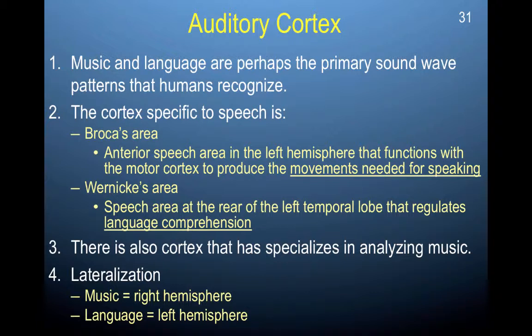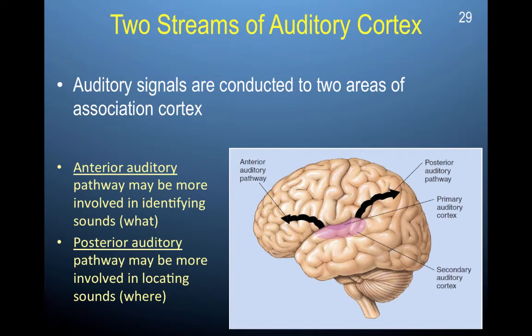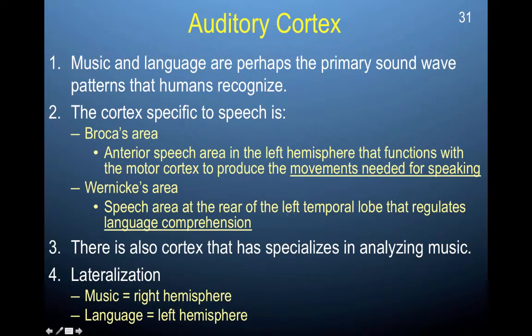Broca's area is the anterior speech area in the left hemisphere that functions with the motor cortex to produce the movements needed for speaking. This is the anterior speech area, associated with Broca's area, moving more anterior to the front. It functions with the motor cortex in the frontal lobes to produce movements needed for speaking — coordinating what you want to say with how your tongue and mouth need to work together to produce those sounds and convey the particular meaning or information you want to communicate.